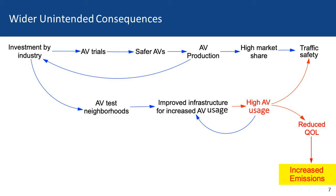With higher AV usage, there would be a reduced quality of life because of traffic, and also reduced traffic safety. In the diagram, I'm showing this with red arrows indicating a negative effect of this increased AV usage.